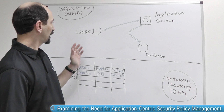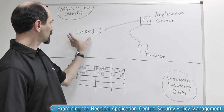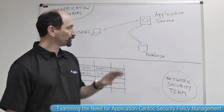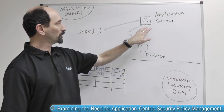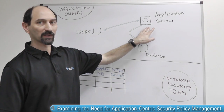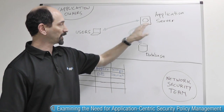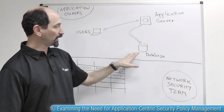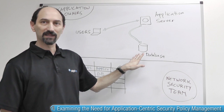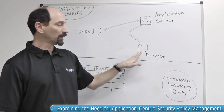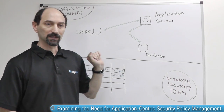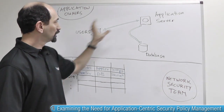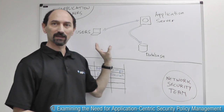Imagine you have an application that serves a particular group of users, and those users need to communicate with an application server. An application server has to communicate to a database system behind the scenes, and the application owners know this.